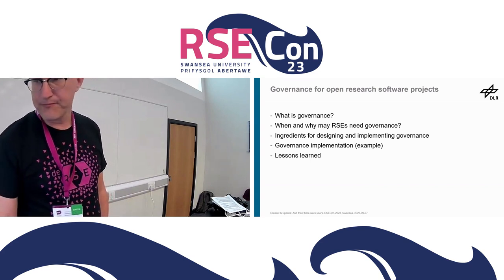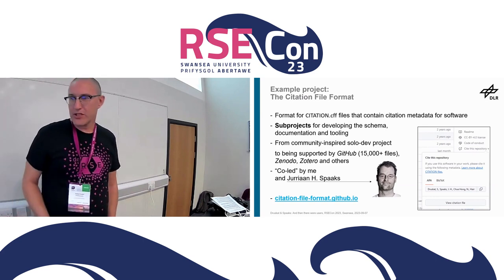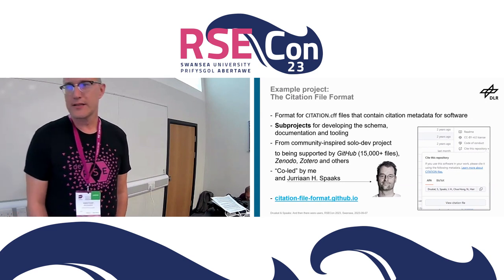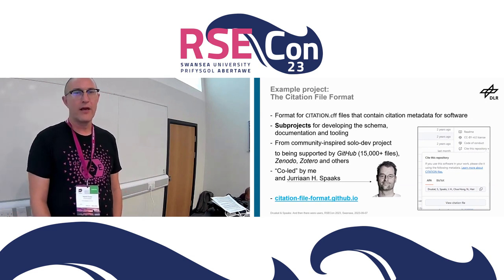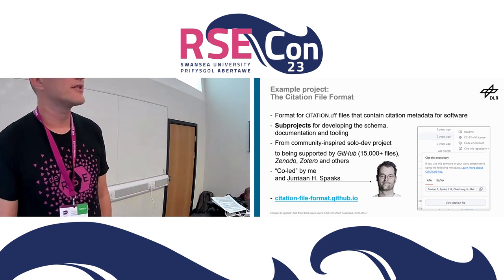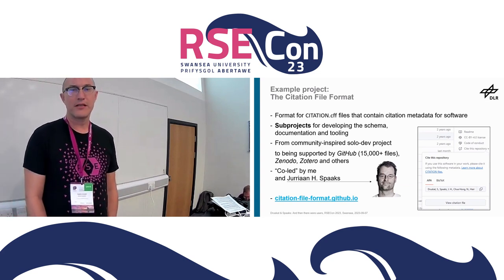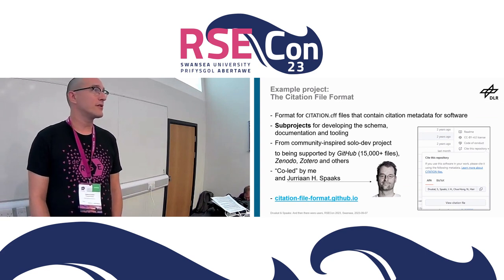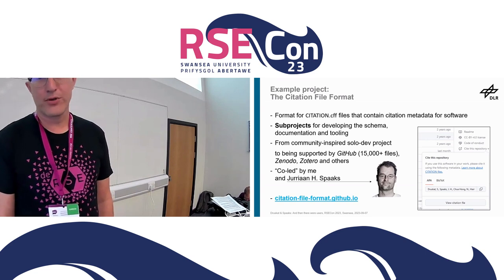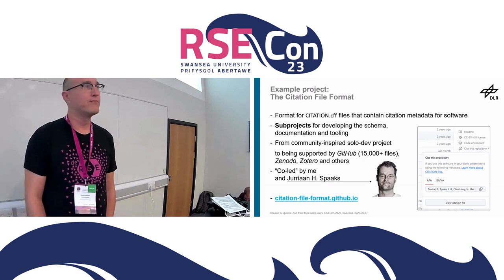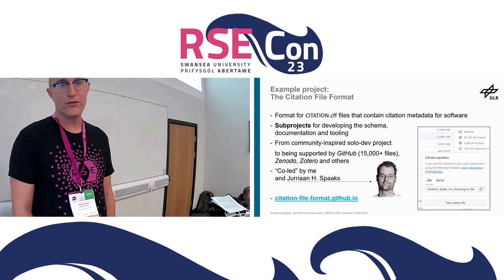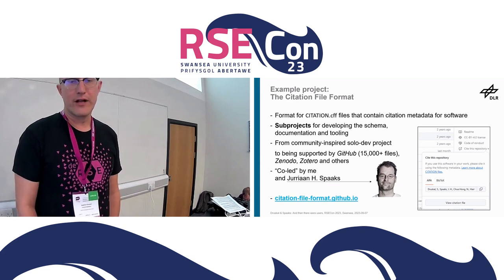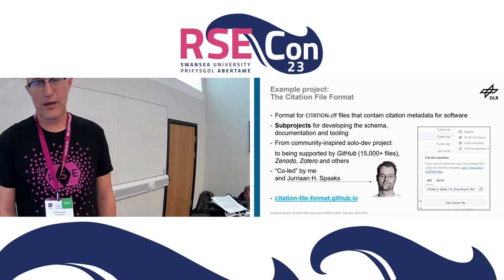The example project I'll be talking about is not really a research software project — it's a thing called the Citation File Format, which is basically a file format for software citation metadata, implemented in YAML. If you want to make your research software citable, you can create a file called citation.cff in that format, put in the correct metadata, and leave it in your repository so other people know how to cite your software and give you credit.